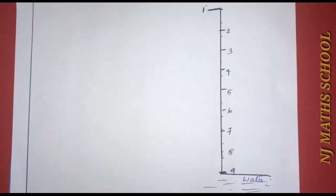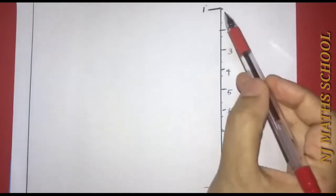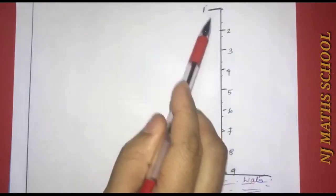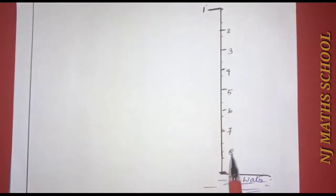In the first step, the water tank has steps. The water level is at the ninth step. If you consider the steps in the water tank: first step, second, third, fourth, and the ninth step where the water level is.